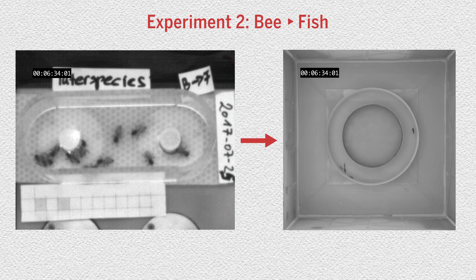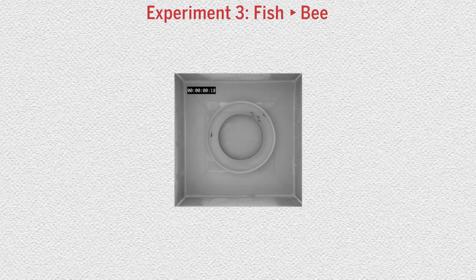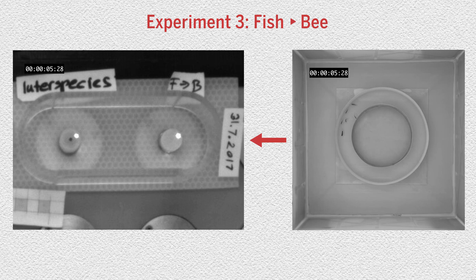In the third experiment, the fish's behavior was observed and then transmitted to the bee robots, affecting which robot produced heat. The fish constantly changed the direction in which they were swimming, which caused the bees to continuously switch sides as well.